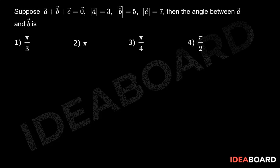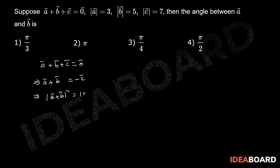Given a⃗ + b⃗ + c⃗ = 0⃗, that implies a⃗ + b⃗ = −c⃗. That implies modulus of (a⃗ + b⃗) whole square equal to modulus of c⃗ square. So modulus of a⃗ square plus modulus of b⃗ square plus 2 into a⃗ dot b⃗ equals mod c⃗ square.